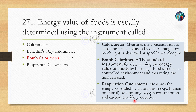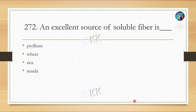An excellent source of soluble fiber is: option A, Psyllium (Paislam); option B, Wheat; option C, Rice; option D, Maida. The correct answer is option A — Psyllium.